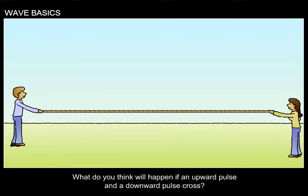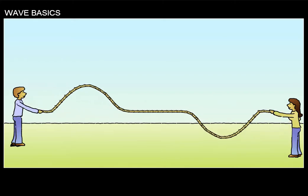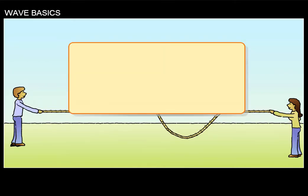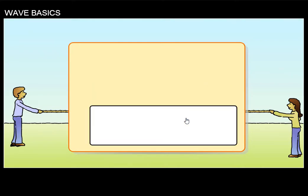What do you think will happen if an upward pulse and a downward pulse cross? Will they A, bounce off each other, B, cancel each other out and stop all motion on the string, or C, cancel each other out as they move through each other and then continue in their original forms after they pass each other?